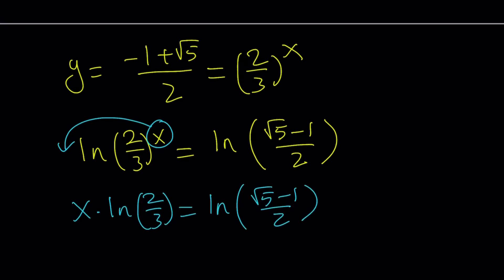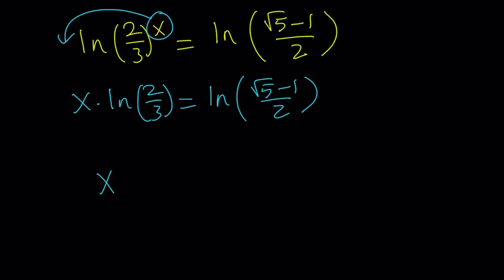Finally, if you divide both sides by ln 2 thirds, you get the solution, the only solution to this equation: x equals ln of square root of 5 minus 1 over 2, divided by ln 2 thirds.